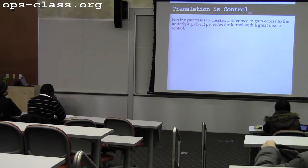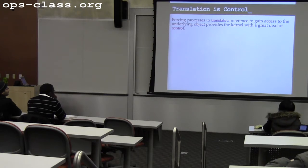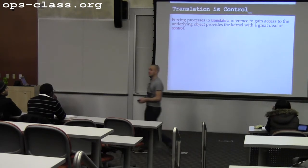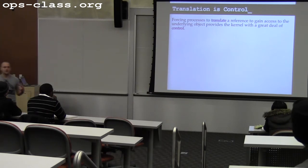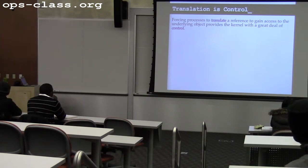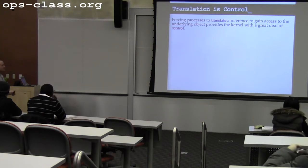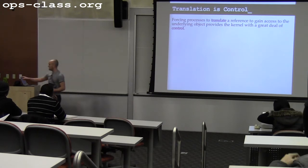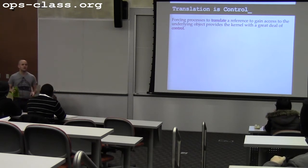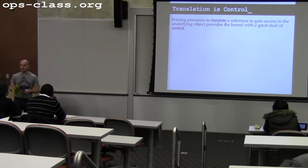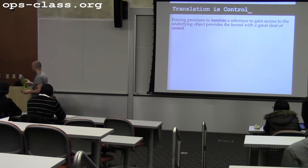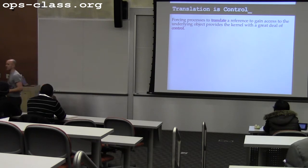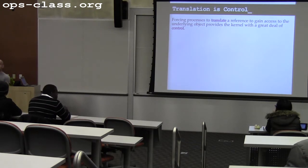So remember that we pointed out that translation is control. By giving processes references to objects — in this case, to memory — I force them to translate them, which gives me some special power. So what are some of the things that providing a reference to a process allows me to do to that object that I wouldn't be able to do otherwise? For example, I can share references — I can give multiple processes references to the same object, which is kind of nice. They don't need to know that they're sharing that object.